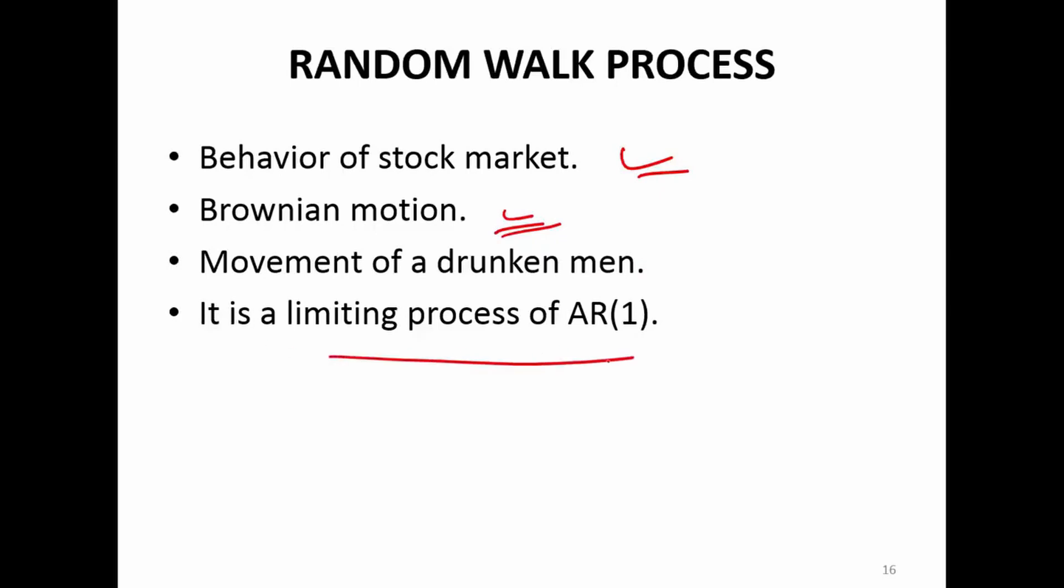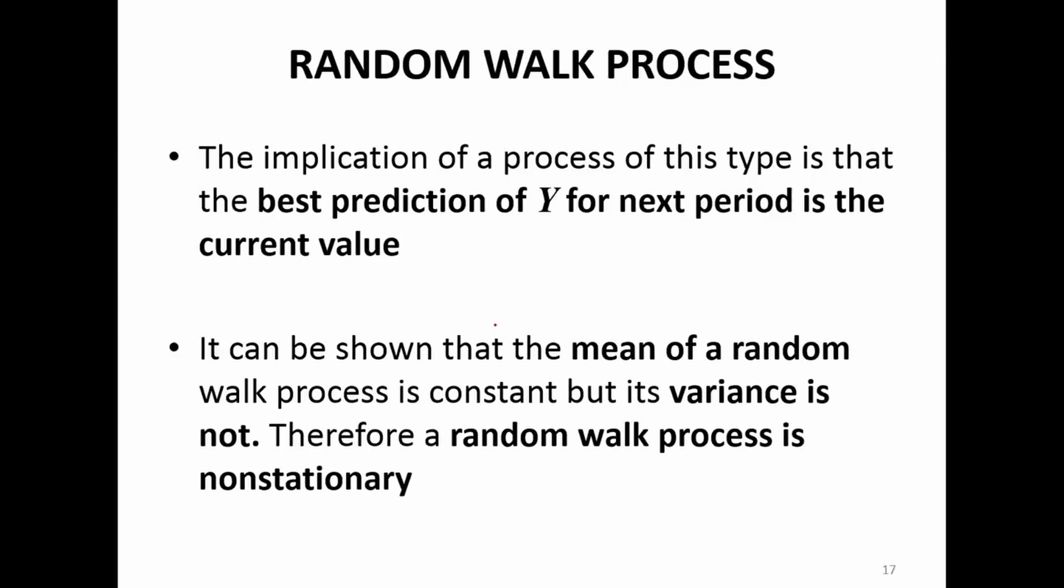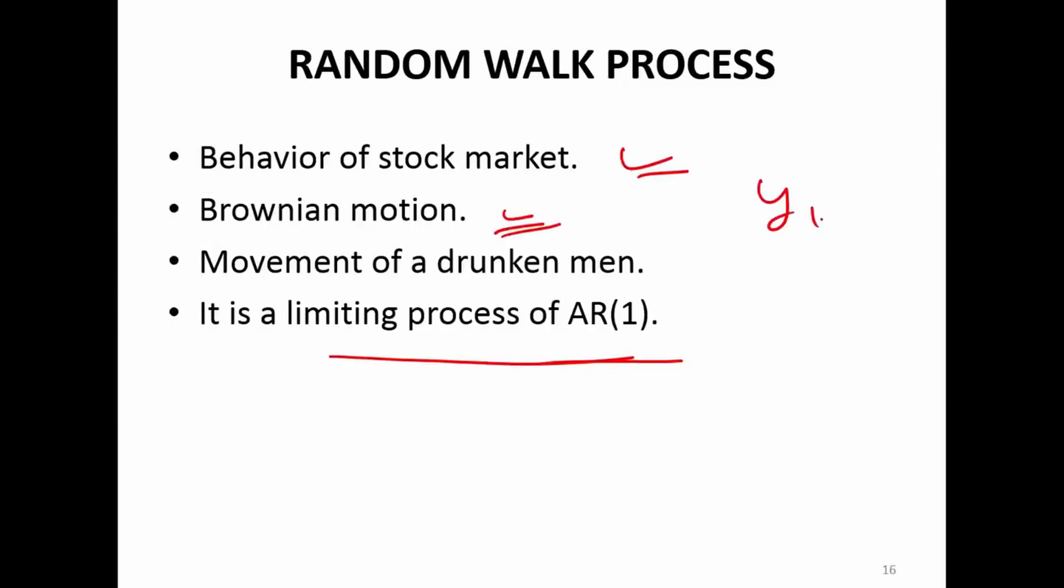It's also a limiting process of an AR(1) process. AR(1) process is just yt equal to phi yt-1 plus at. This is an AR(1) process. When phi equal to 1, you get the random walk process. If phi is less than 1, you have the AR(1). Random walk is basically the special case of AR(1) where you cannot go ahead in building a forecasting model.